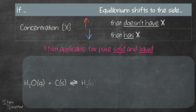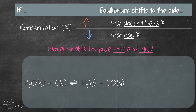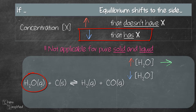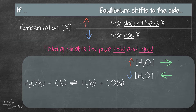This guideline works regardless of whether substance X is a reactant or a product. Using an example reaction that is in equilibrium: if we increase the concentration of H2O gas, meaning steam, then the equilibrium will shift to the side that doesn't have H2O, which means it shifts to the right. If we decrease the concentration of H2O, it shifts to the side that has H2O, meaning the equilibrium shifts to the left. Since H2O is a reactant, let's also use a product as an example — CO. If we increase the concentration of CO gas, which is on the right-hand side, equilibrium shifts to the side that doesn't have CO, meaning it shifts to the left.